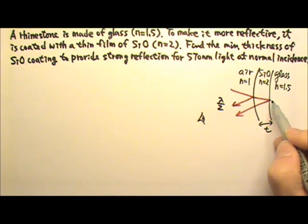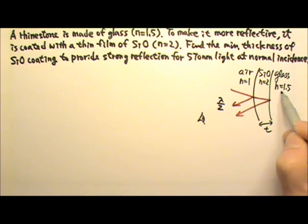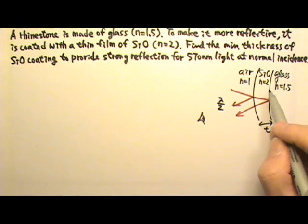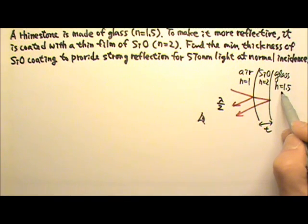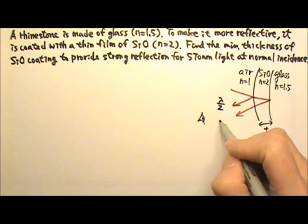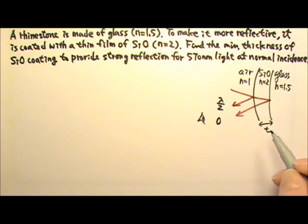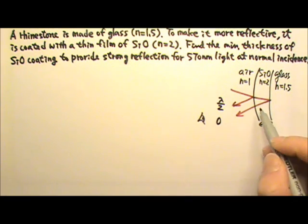For this second reflection, it is reflected off of n equals 1.5 from n equals 2, so it is being reflected off of a smaller n. That means it is like being reflected off of a free end. So peak stays a peak, trough stays a trough. That means there is no wavelength shift due to the reflection.